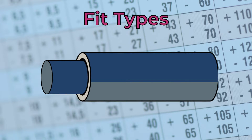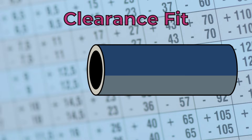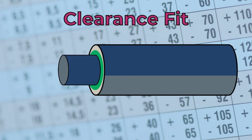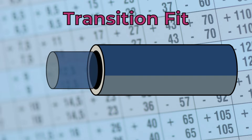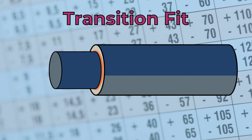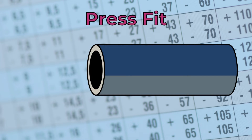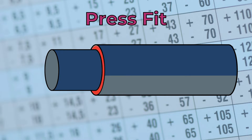Finally, let's discuss the main fit types. A clearance fit is a type in which the shaft is smaller than the hole it is inserted into, allowing for free movement, assembly, and disassembly. A transition fit is a type in which the shaft may be slightly smaller or larger than the hole before assembly; it is used to create a tight and secure connection in applications requiring high precision and stability. A press or interference fit is a type in which the shaft is larger than the hole before assembly, creating a tight and secure connection between the two parts.